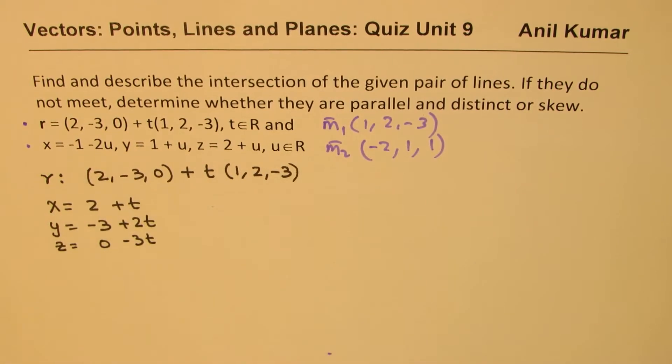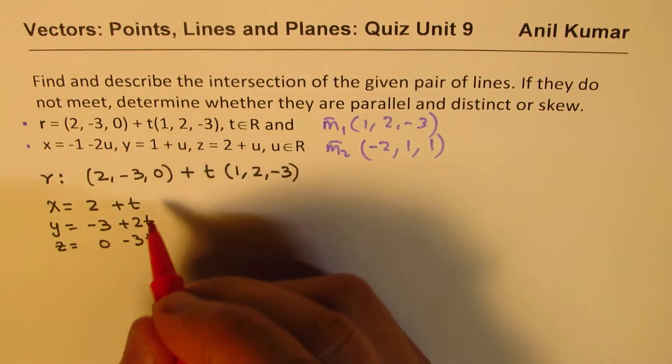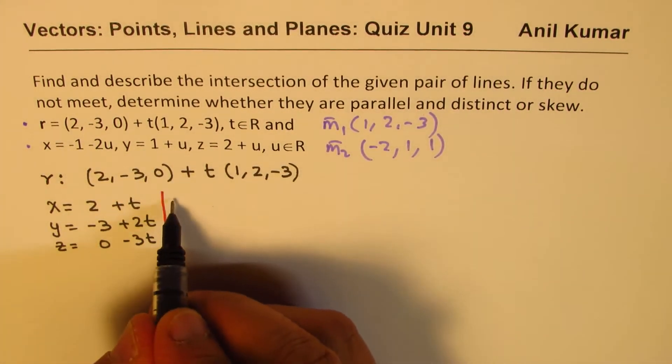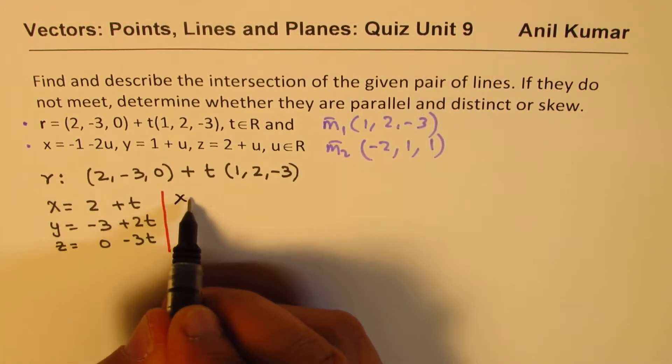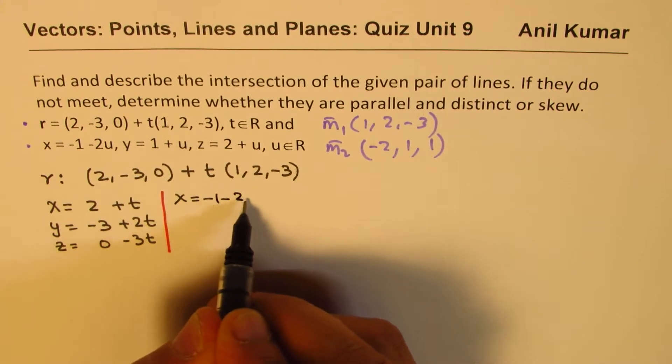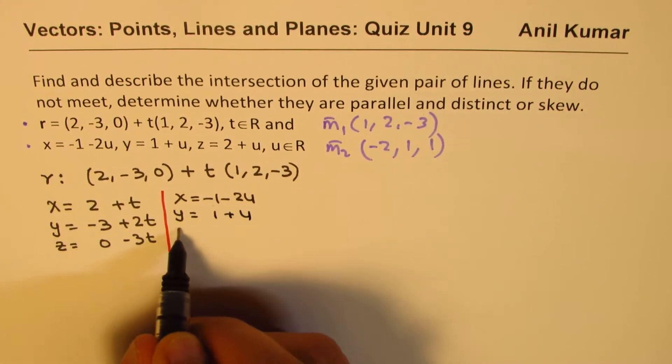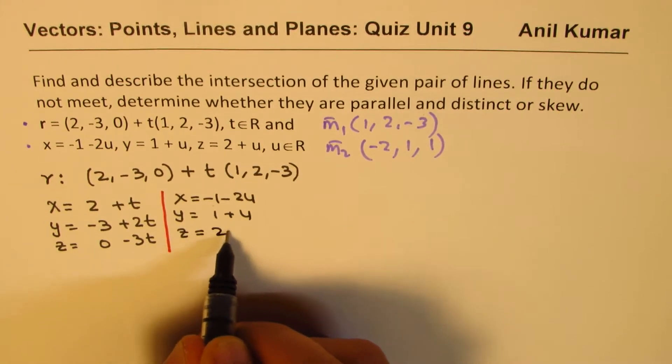The other line given to us is, let's rewrite that also here, it helps. So I am rewriting this. We are given for the second line, X = -1 - 2U, Y = 1 + U, and Z = 2 + U.